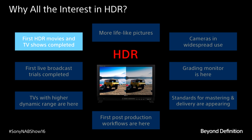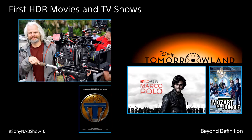Not only live production — we are now beginning to see the use of high dynamic range in movies and full feature films. This is Claudio Miranda, one of the very famous directors of photography in Hollywood. He shot the movie Tomorrowland using the F65, totally in high dynamic range. There are other programs, like Marco Polo and Mozart in the Jungle, also using Sony cameras in high dynamic range mode.